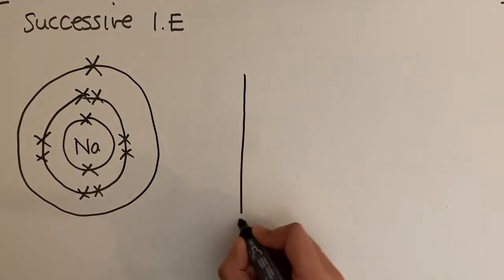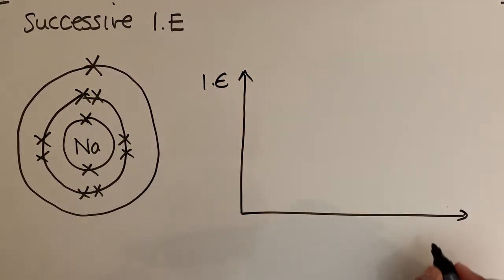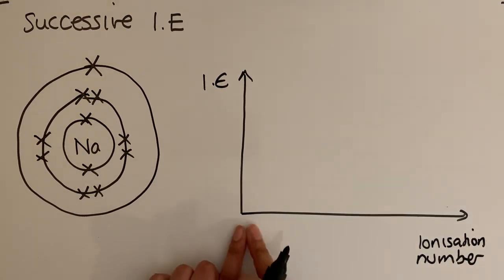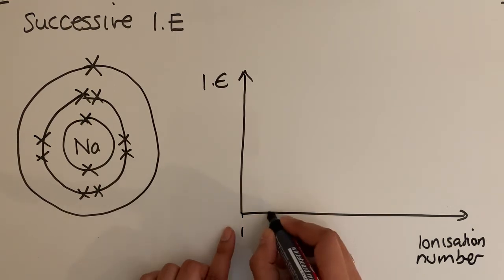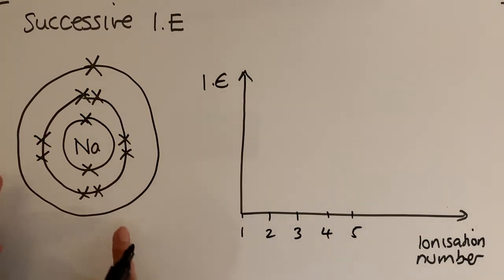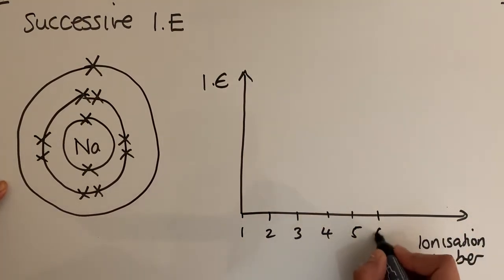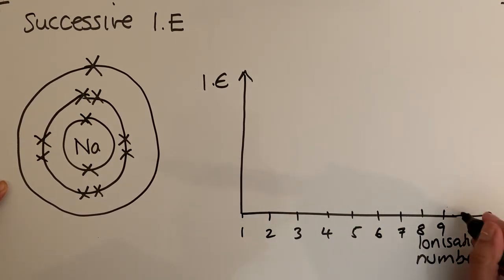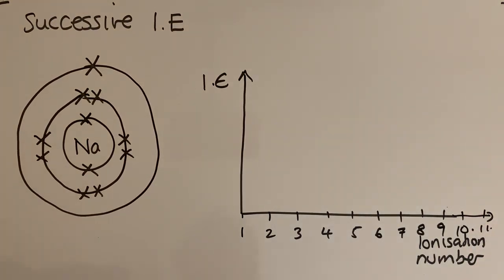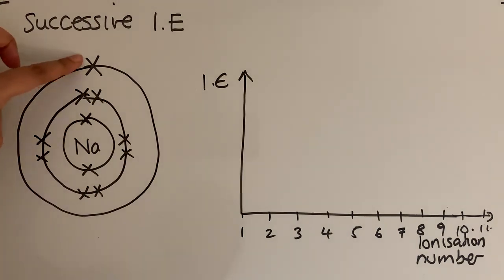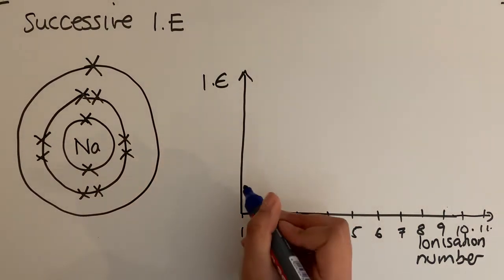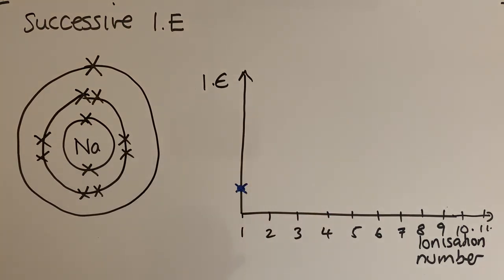We make a plot of ionization energy against ionization number. For sodium, we go up to 11 on the x-axis. The outermost electron — the one in the third shell, furthest away and alone in that shell — has the largest radius, so the first ionization energy is the lowest.